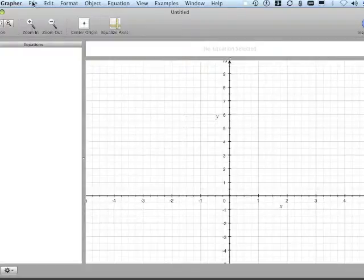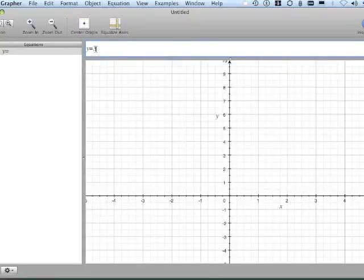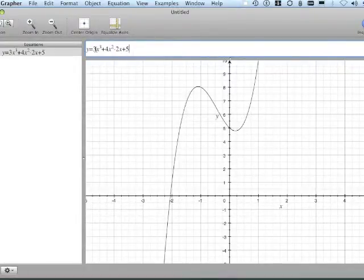This is Grapher, and we're going to start with an equation, find the derivative, and then integrate it and double-check to see whether we got back to the same spot. I'm going to add an equation, and this is going to be 3x³ + 4x² - 2x + 5.